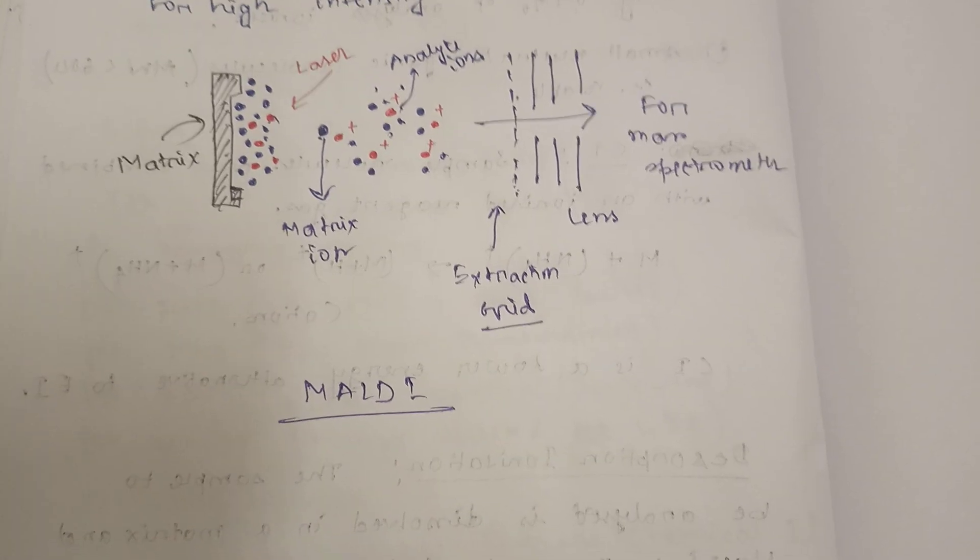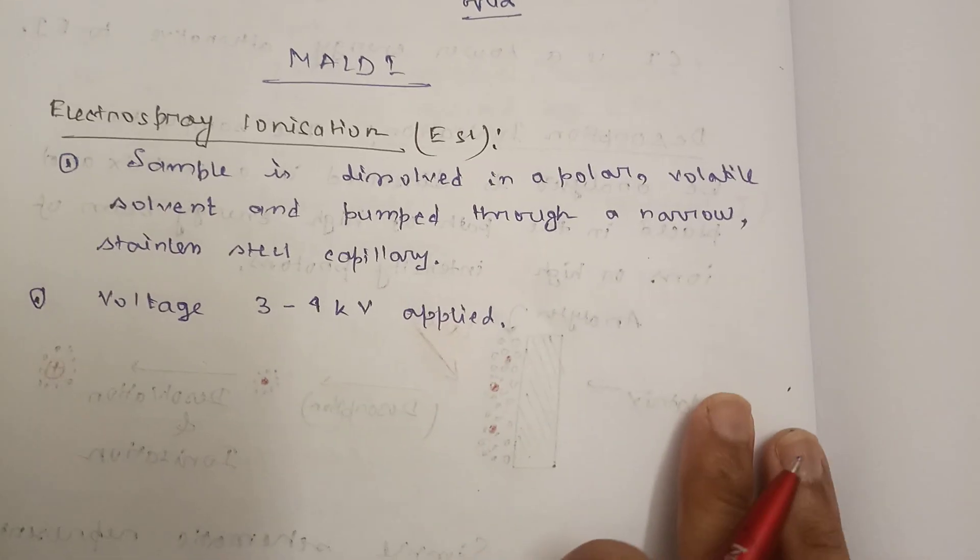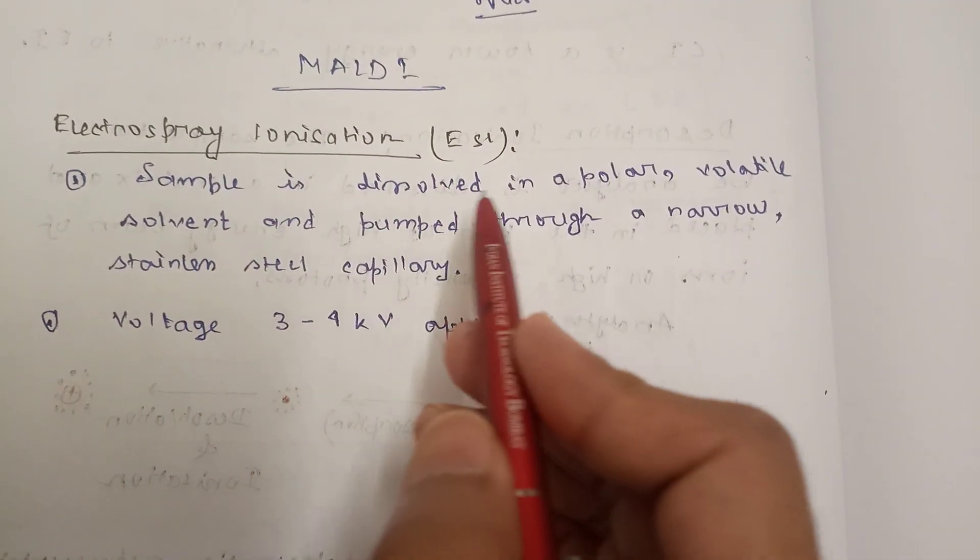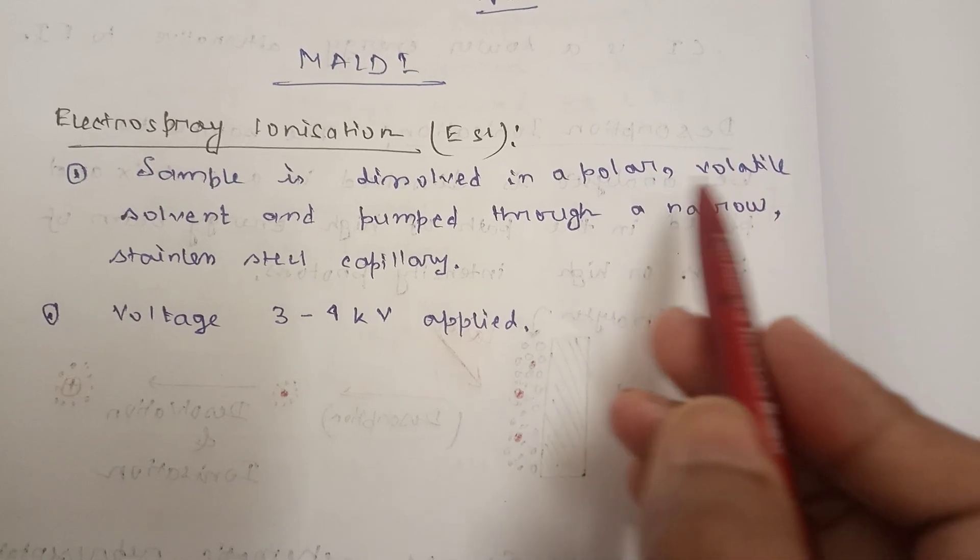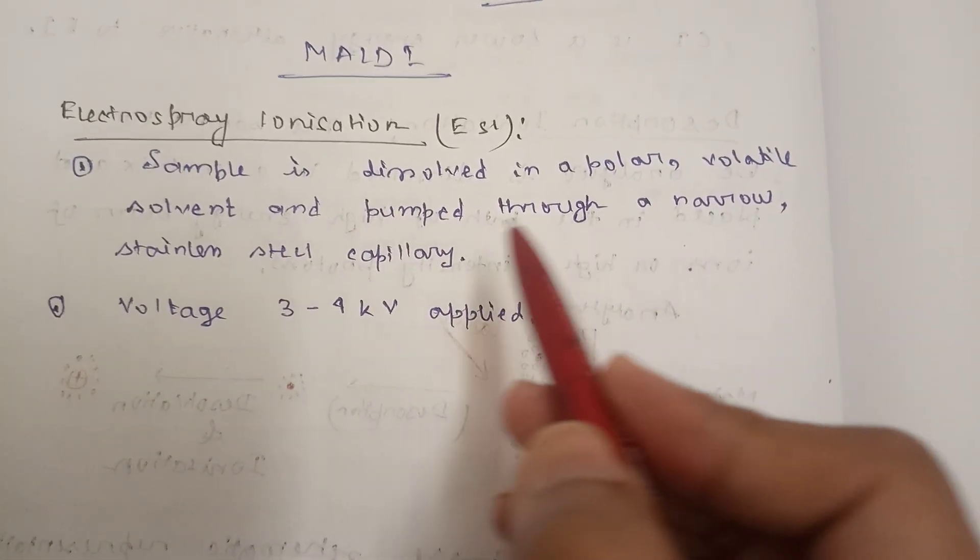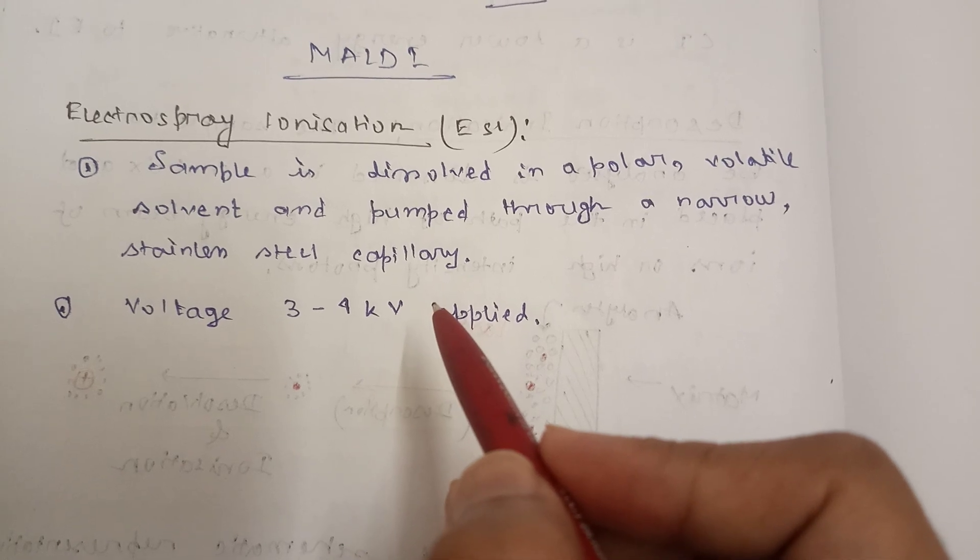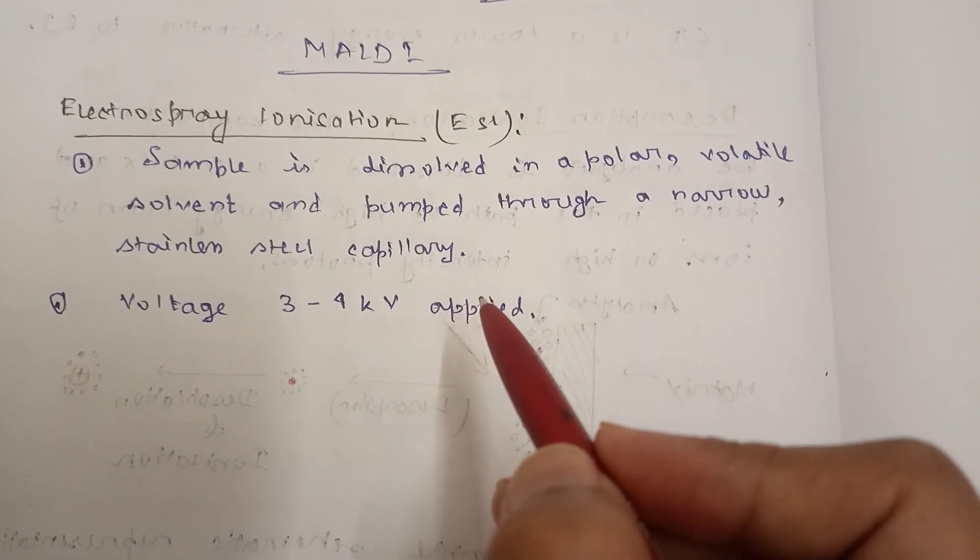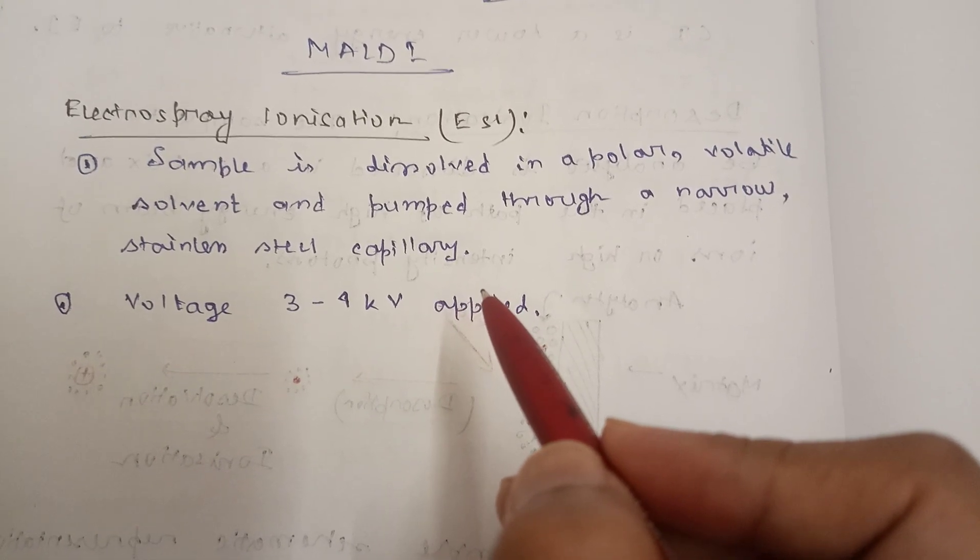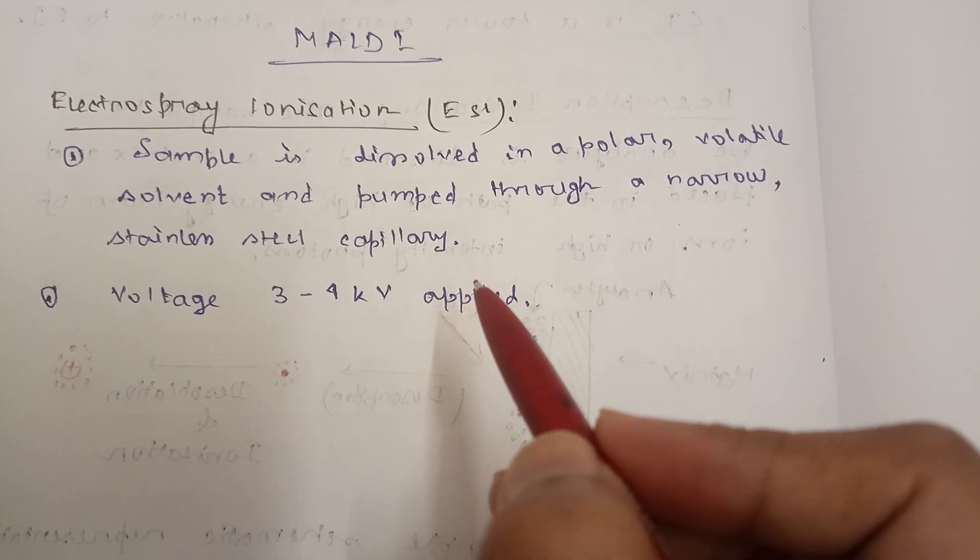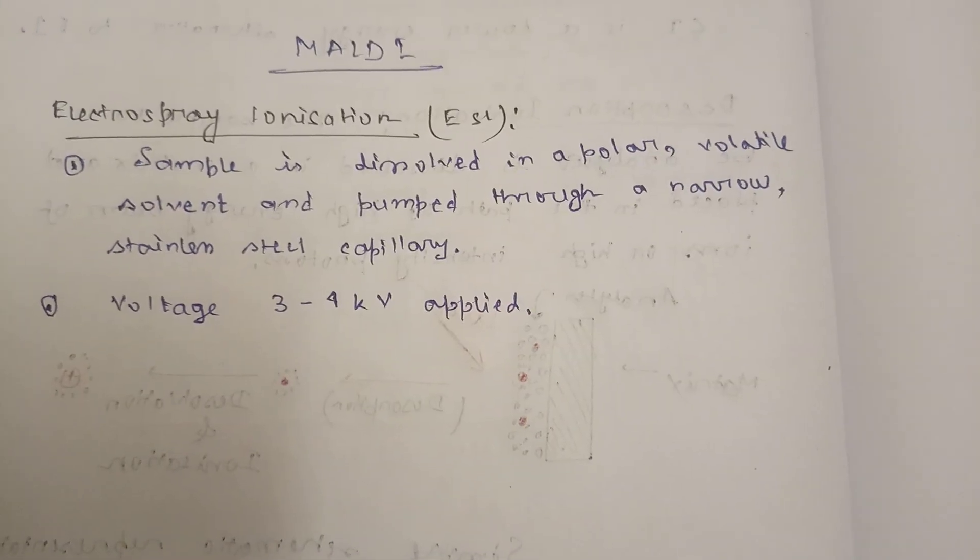Now we will look at the last part, electrospray technique. What happens in ESI? First, the sample is dissolved in a polar volatile solvent and formed through a narrow stainless steel capillary. The voltage needed is about 3 to 4 kilovolts applied to the tip of the capillary. Let's check the diagram.